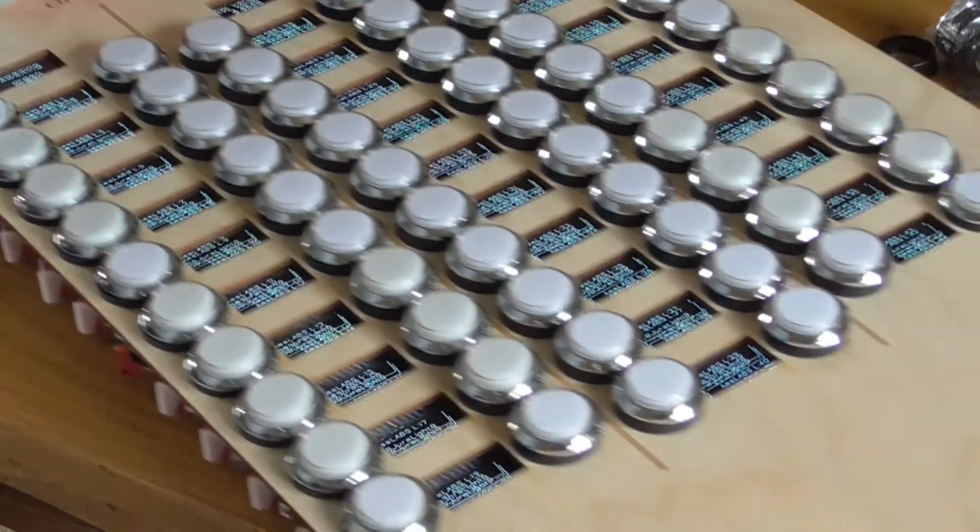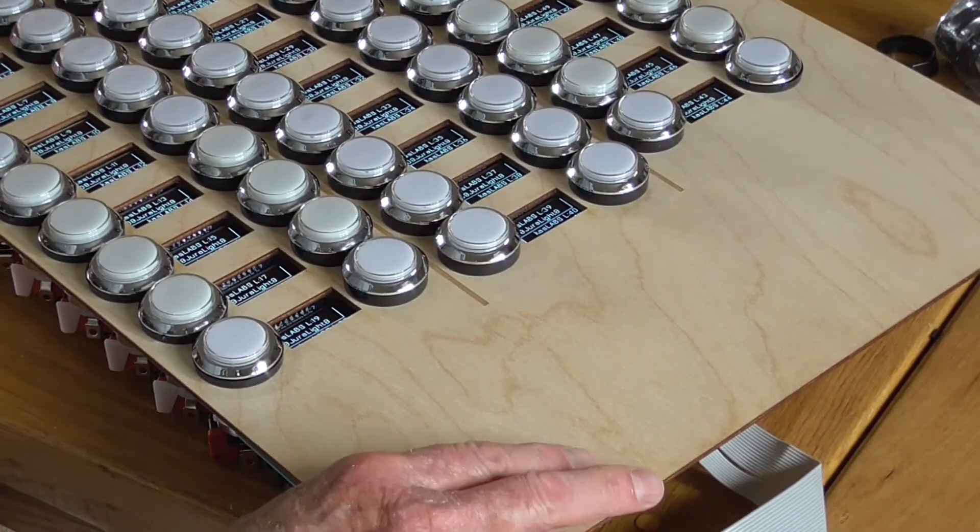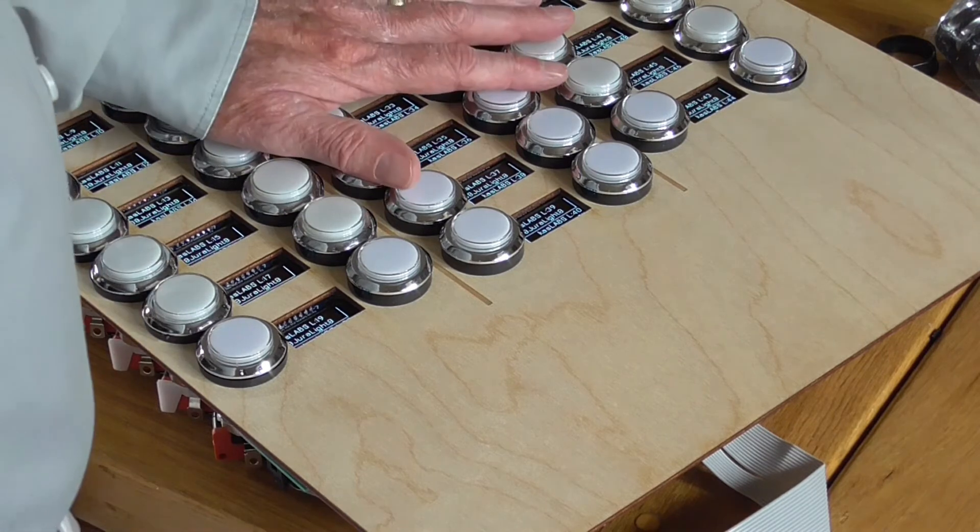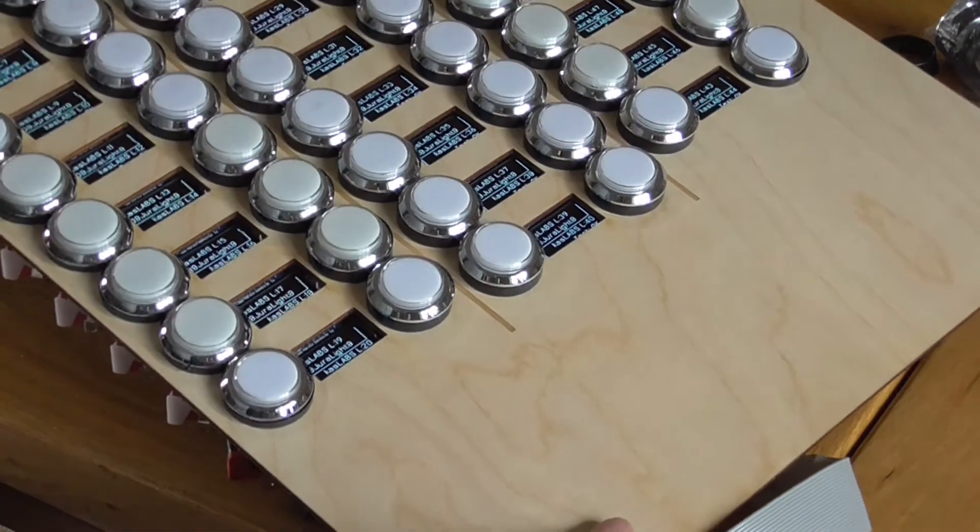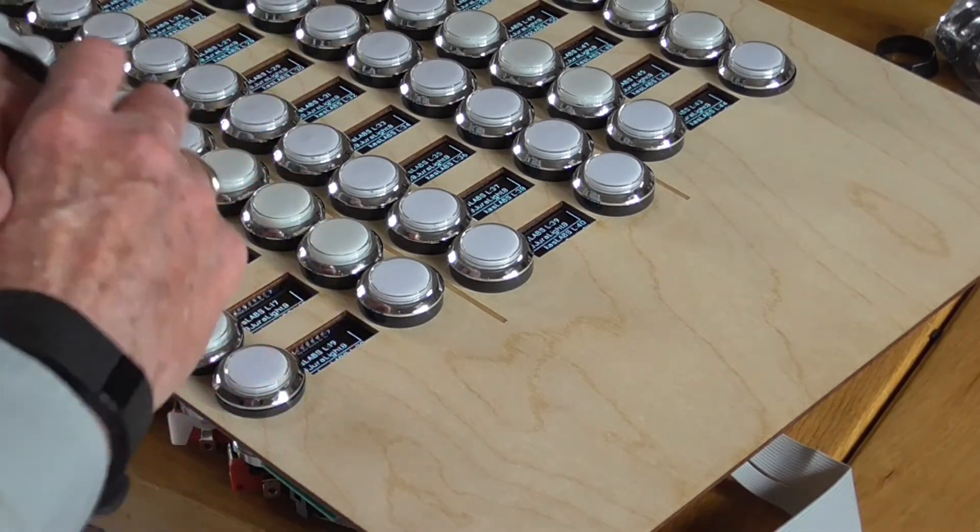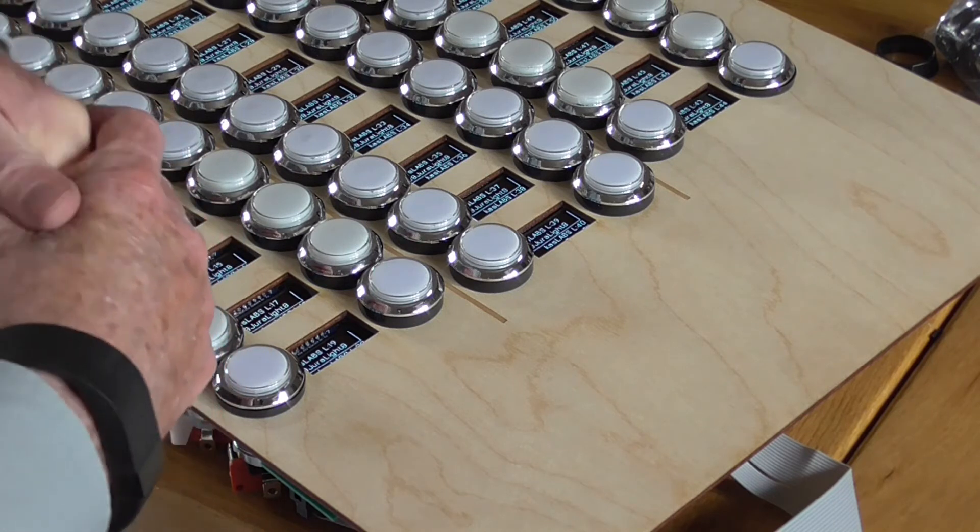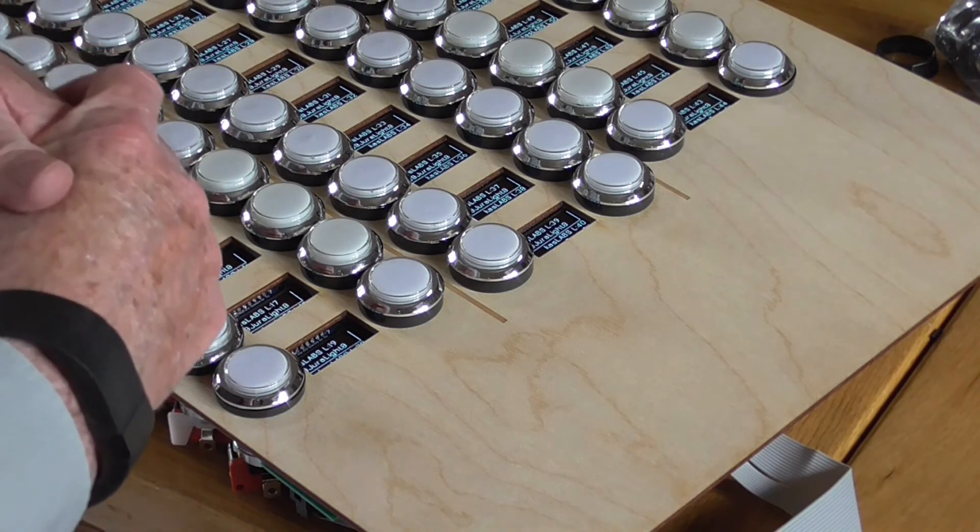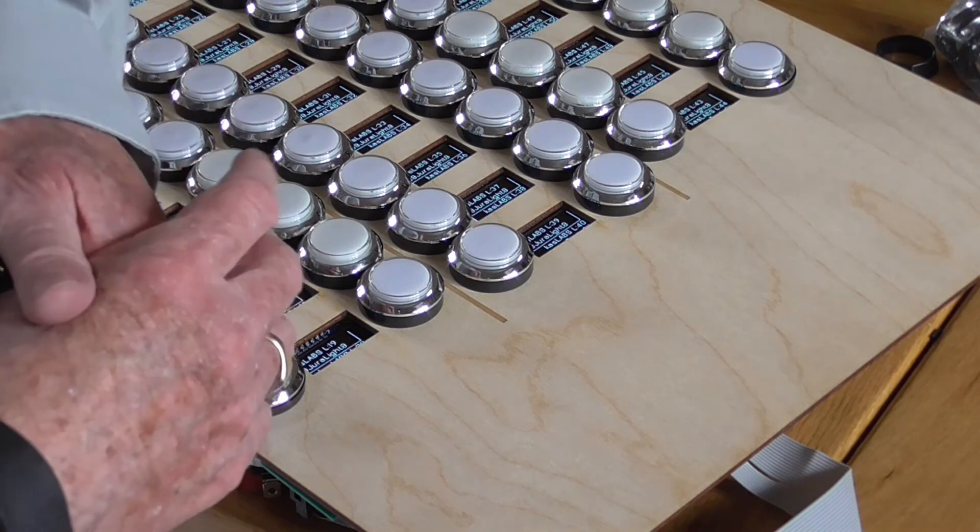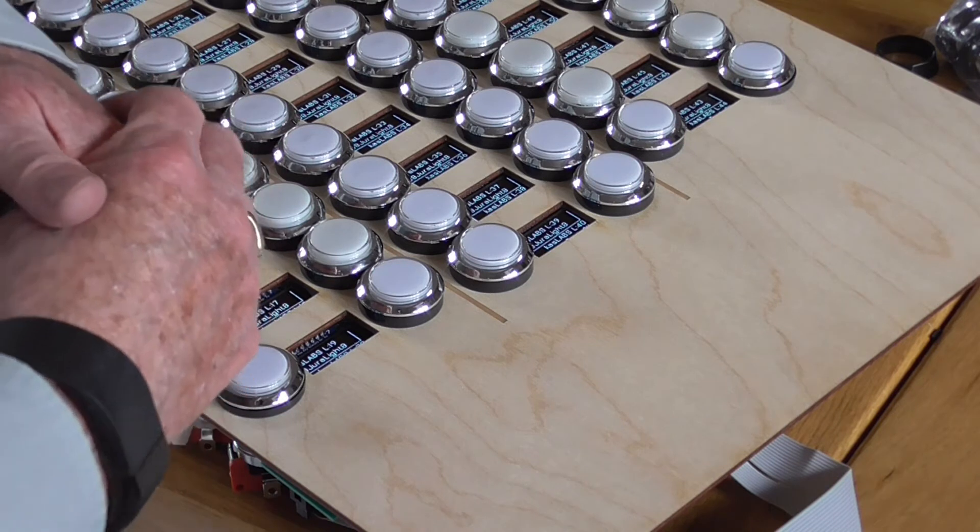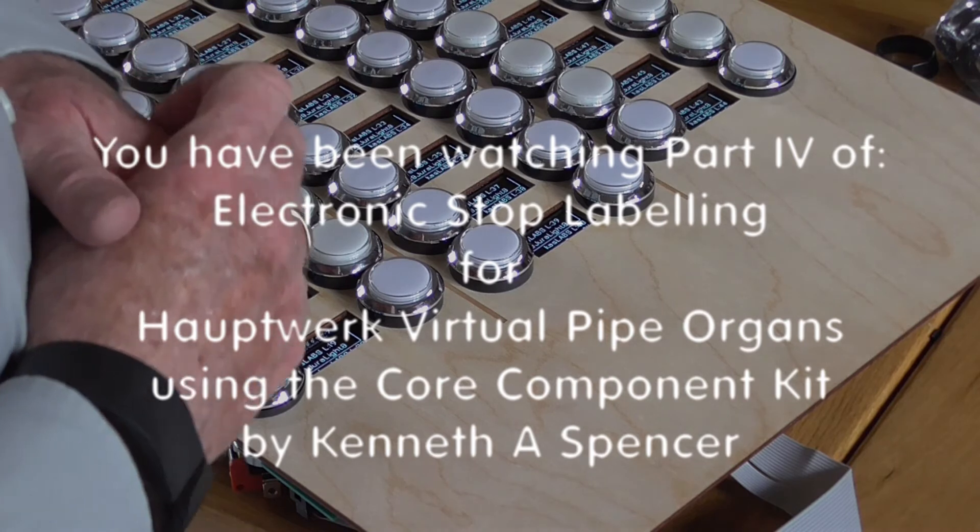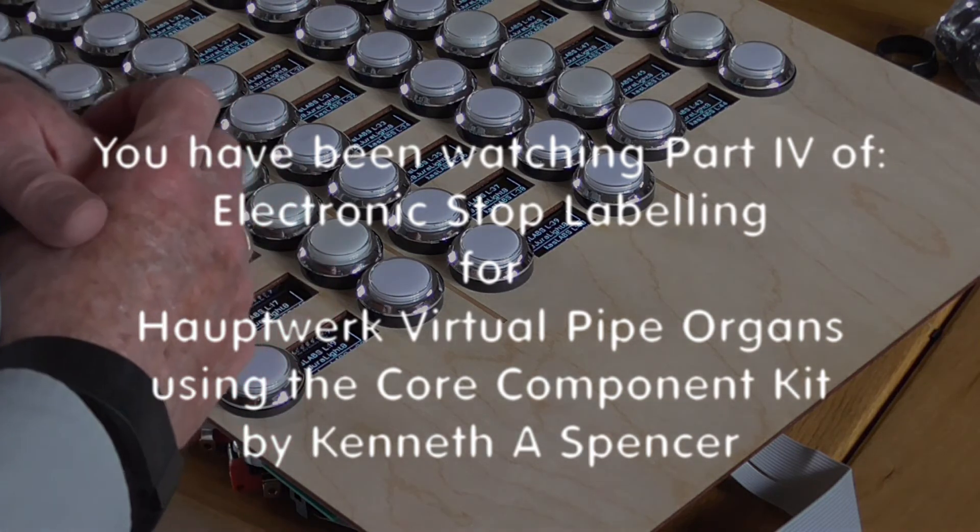So what we've done is constructed our right-hand stop jam and we have all the OLEDs in position. That completes number four, part four of our videos. I'm going to do one more part for you, part five, which is just going to discuss the connections between the stop switches and their LEDs and the MIDI encoders and decoders. Thank you very much.